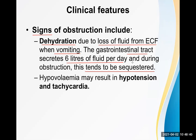Hypovolemia from third-space loss and vomiting may result in tachycardia and hypotension. Tachycardia is the earlier feature; hypotension comes very late when dehydration is decompensated. The definition of hypotension is systolic blood pressure less than 90 mmHg with signs and symptoms — the diastolic is not used in the definition.